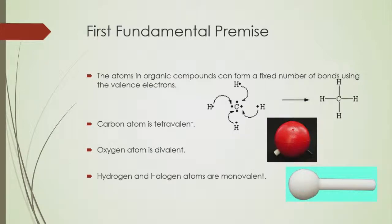has two very basic fundamental premises. The first one states that atoms in organic compounds can form a fixed number of bonds using the valence electrons. So when you come to carbon atom, it is tetravalent—that means there are four valence electrons. As you can see over here, a carbon can form bonds with four hydrogens.